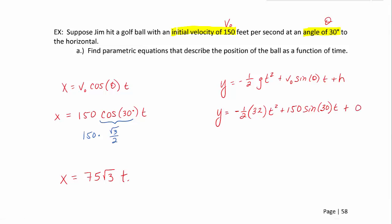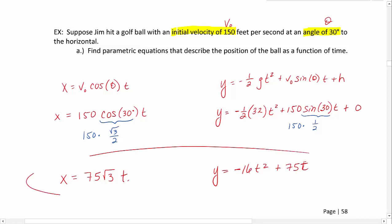Now we want to do a little cleanup. We know what sine of 30 is—that's just one half. So here we're looking at 150 times one half. Negative one half times 32 is negative 16 t squared. 150 times one half is 75 t, and that plus 0 is gone. So here we are. Here are our parametric equations. We're now going to use these parametric equations to answer the other parts of this question.